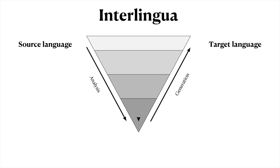So interlingua, when applied to machine translation, consists of only two steps, not three — there is no transfer step. Interlingual representations are the result of analysis, and from that same representation, generation directly produces the surface form of the target language sentence.